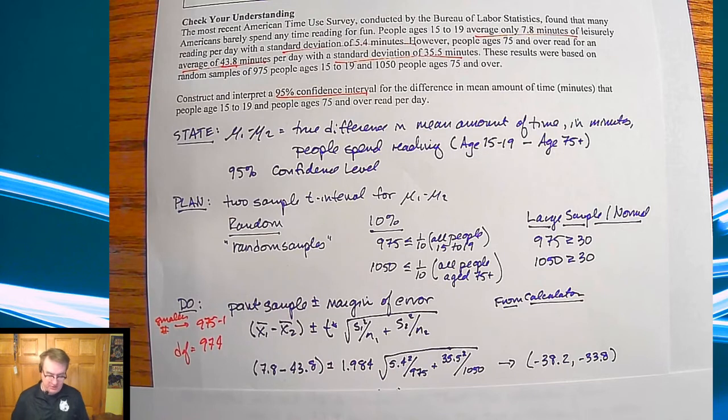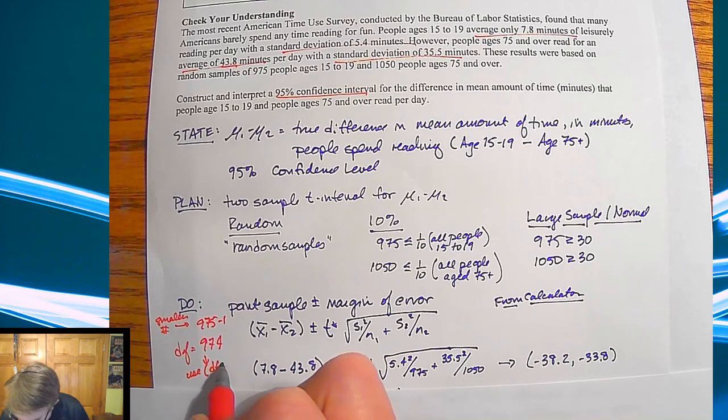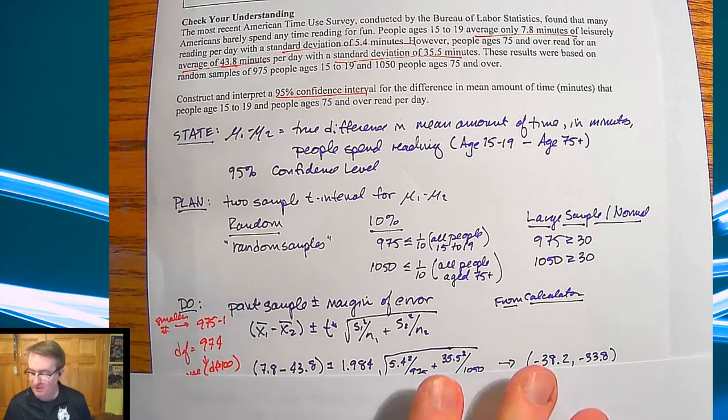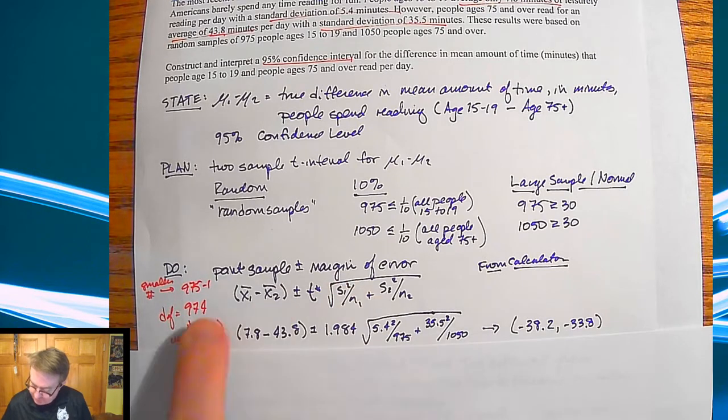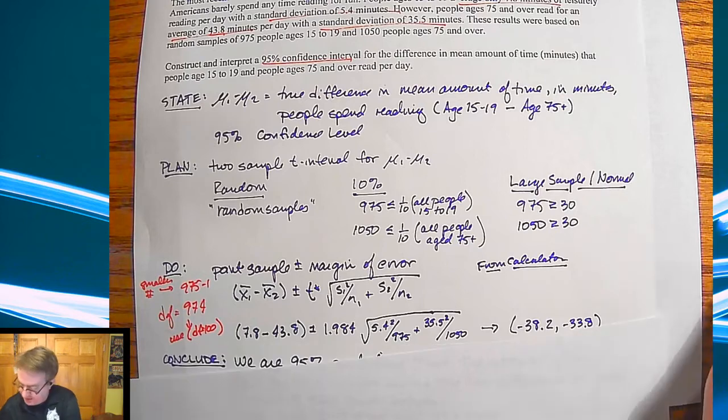That's going to be our most conservative, so that means we're going to use degrees of freedom of 100 on the board. Again, if you use a calculator for inverse t scores, you could type in 974 if you want. From there, plug it all in and we get a confidence interval from -38.2 to -33.8. The calculator will take care of that.